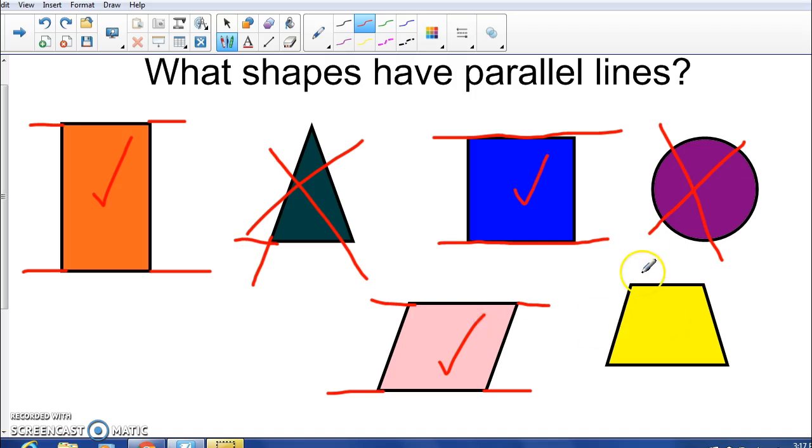And the last shape, this is a trapezoid. Now if I extended the left and right sides, what's going to happen? Those are going to meet eventually. So you'd say, no, it doesn't have parallel lines. But what if I do it with the top and bottom? Top and bottom. Those lines are parallel. So this does have parallel lines. It's different than the other ones because it only has one set of parallel lines. Only the top and bottom are parallel. The left and right are not.